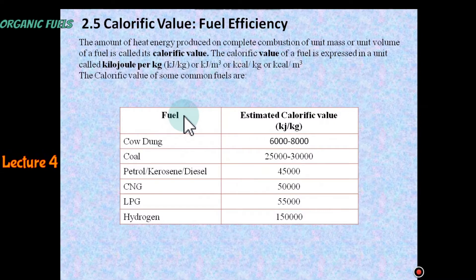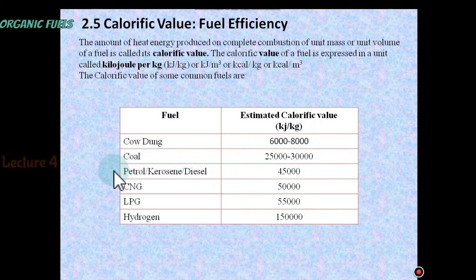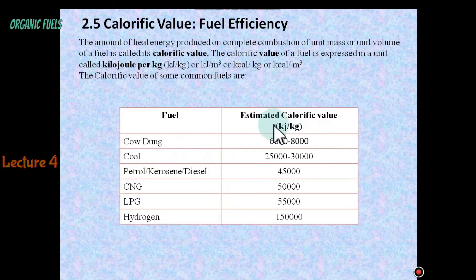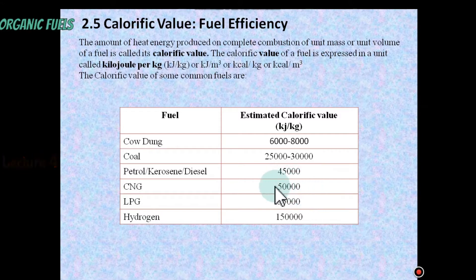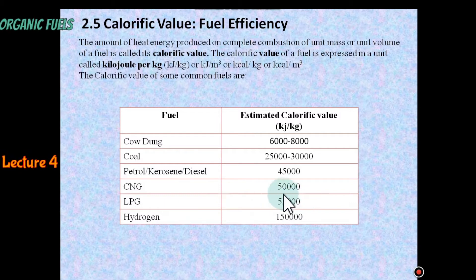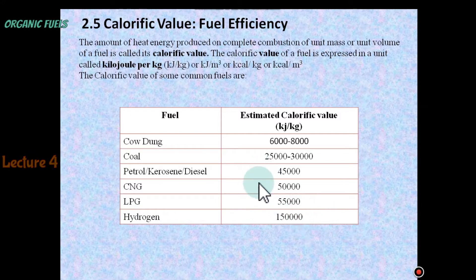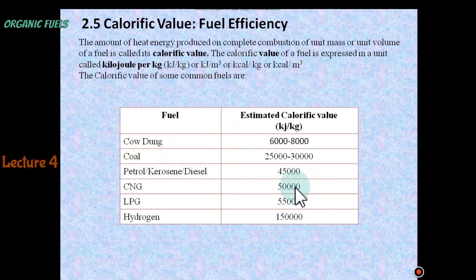The calorific value of some common fuels: the most important fuels used in our daily life are petrol, kerosene, and diesel, with an estimated calorific value of 45,000 kJ per kg. CNG — compressed natural gas — has a higher calorific value of 50,000 kJ per kg. LPG — liquefied petroleum gas — is 55,000 kJ per kg. Hydrogen has the highest calorific value among all these fuels at 150,000 kJ per kg.